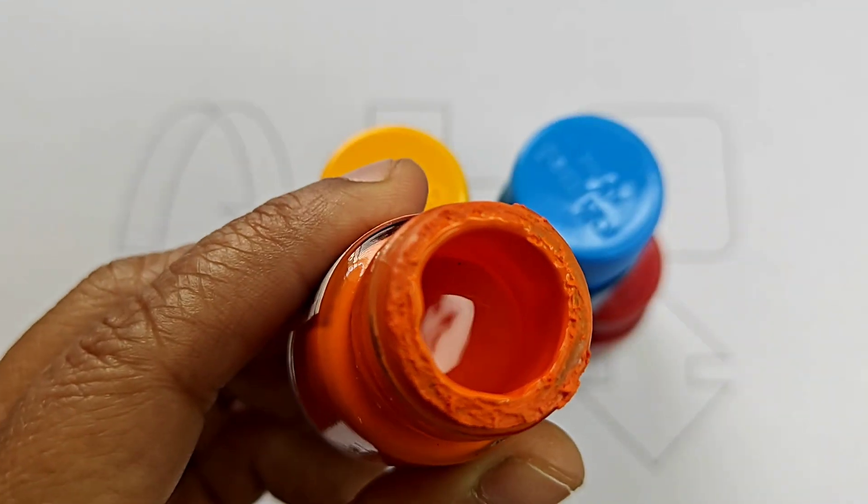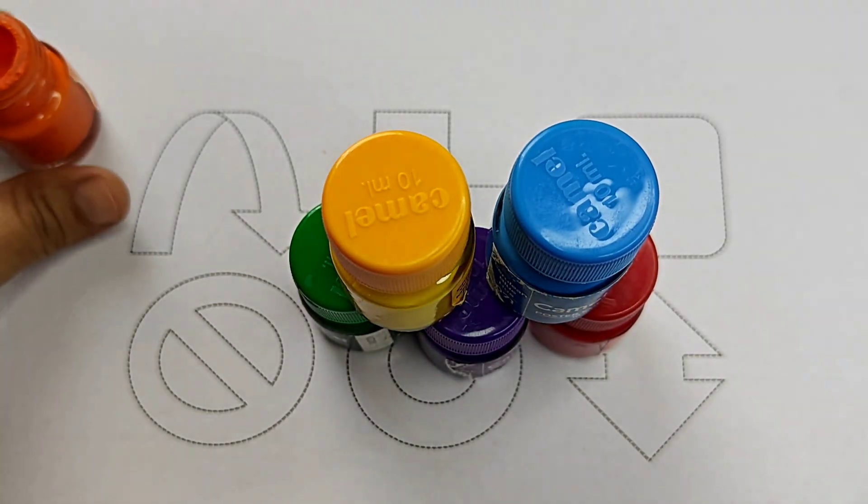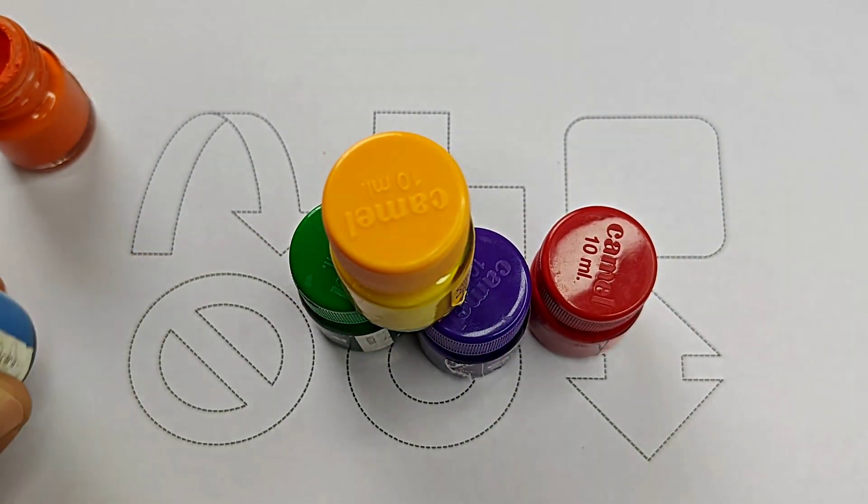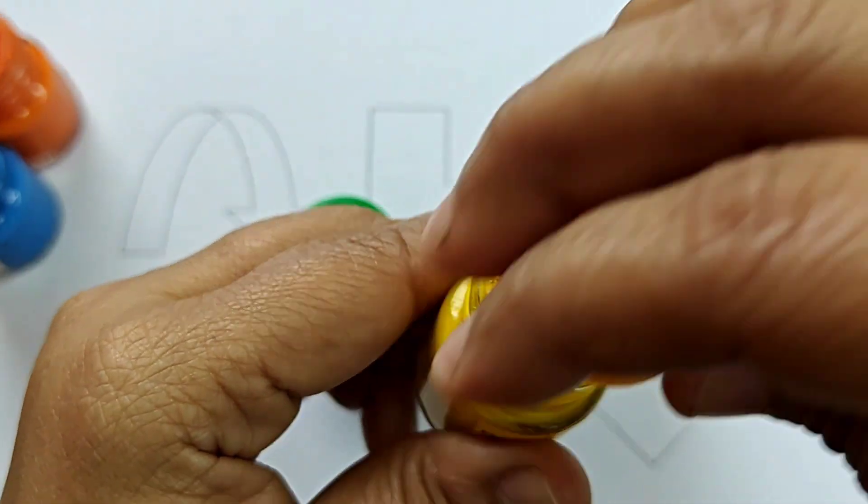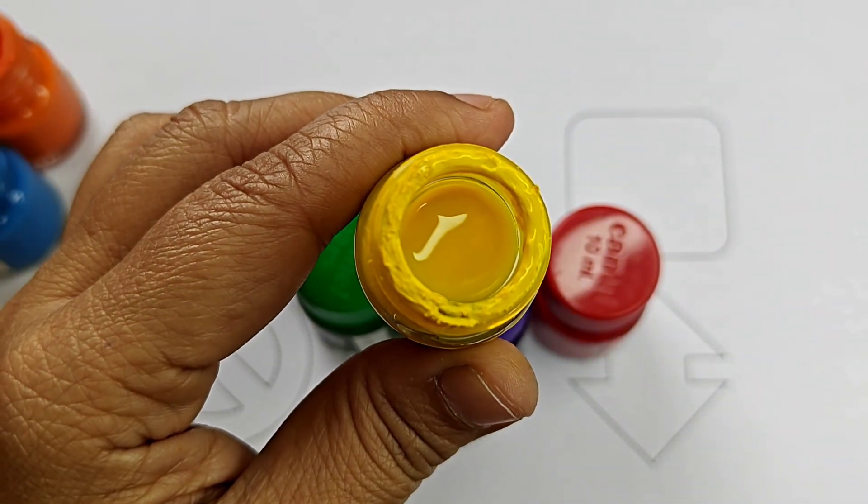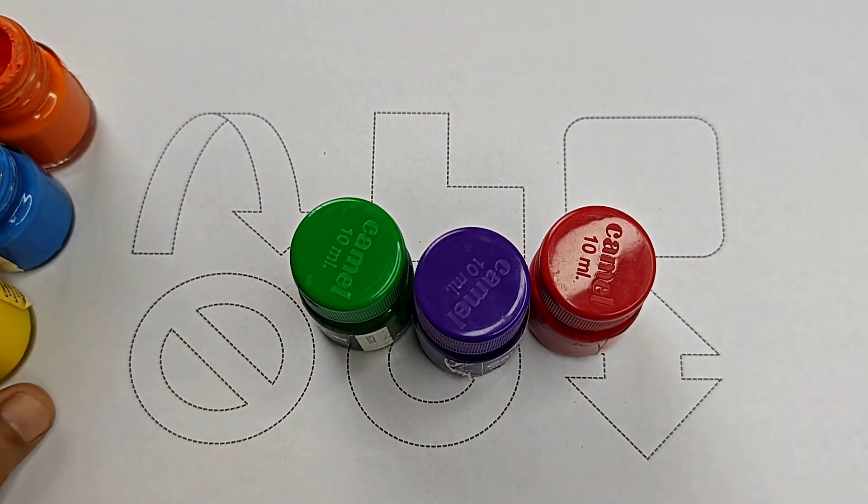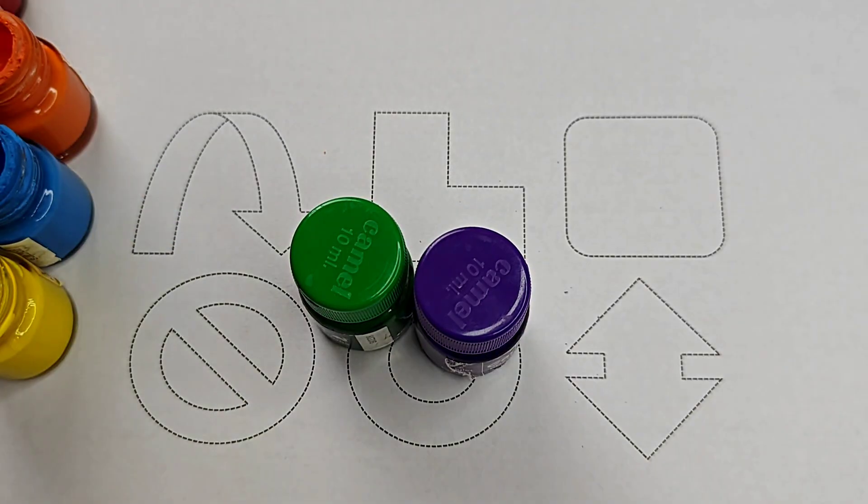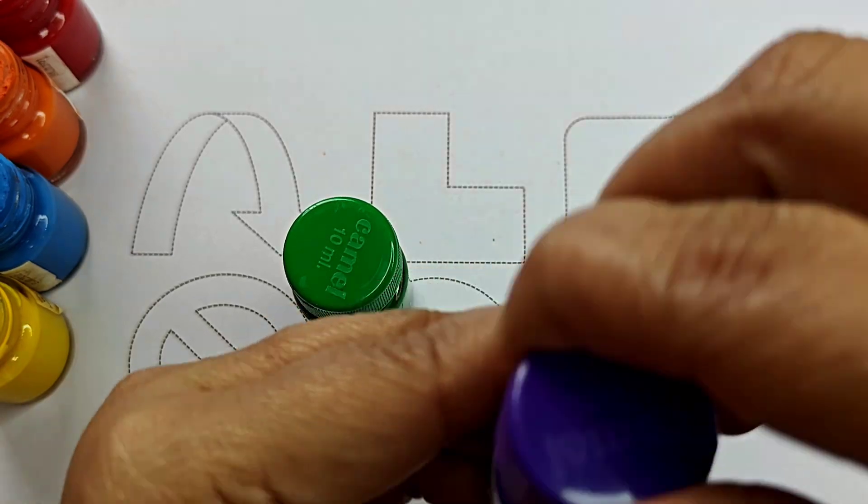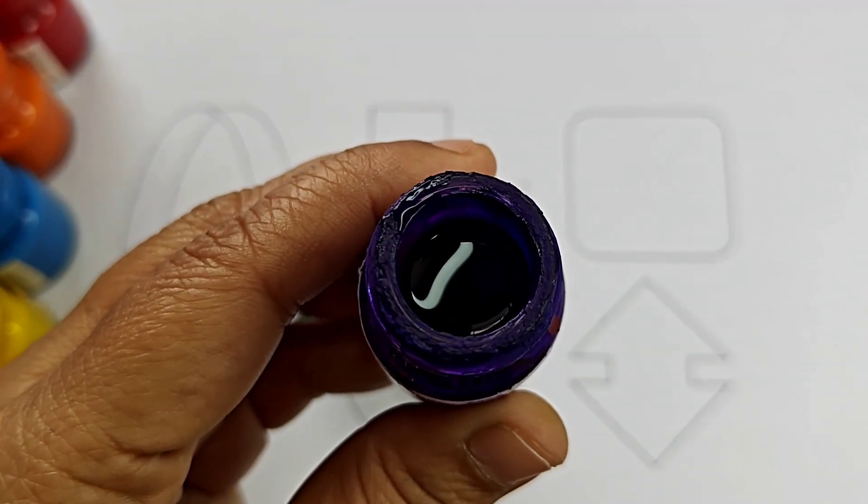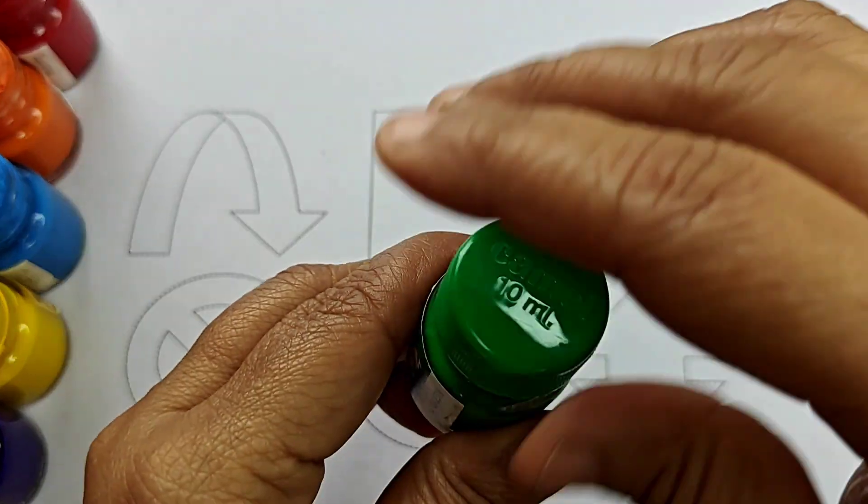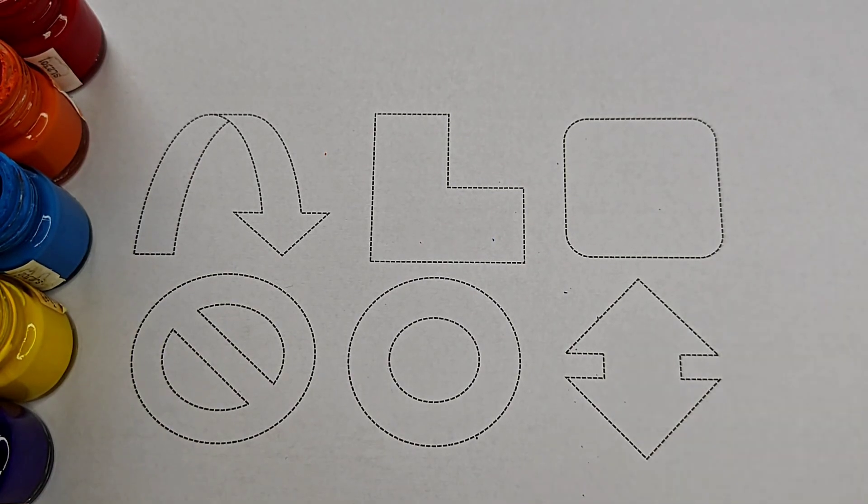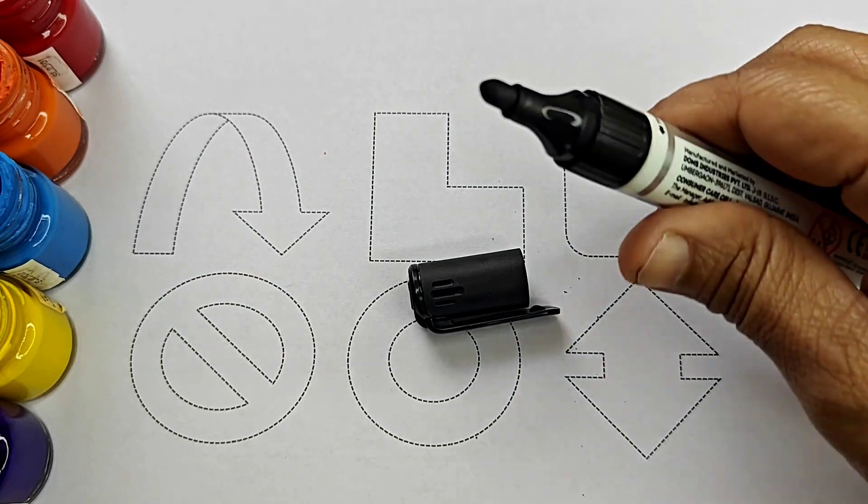Orange, orange, orange. Blue, blue, blue. Yellow Y-E-L-L-O-W. Red, red. Violet V-I-O-L-E-T. Green G-R-E-E-N. This is black color B-L-A-C-K, black.